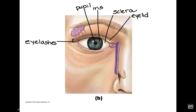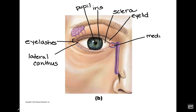With the eyelids, we have two locations where the upper and lower lids come together. One is here at the side, and this is called the lateral canthus. The other one is here on the inside, which is called the medial canthus. Next to the medial canthus is this red piece of tissue, which we'll talk about its function in a little bit — this is the lacrimal caruncle.